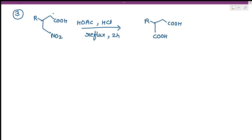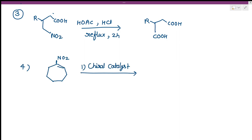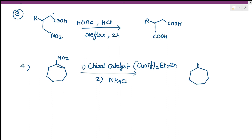In the next example, the compound is treated with a ferral catalyst, Cu(OTf)2, Et2Zn, and then treated with NH4Cl, giving a product with a carbonyl double bond and an ethyl group. These are some of the examples of the Nef reaction, and this covers the complete topic of the Nef reaction.